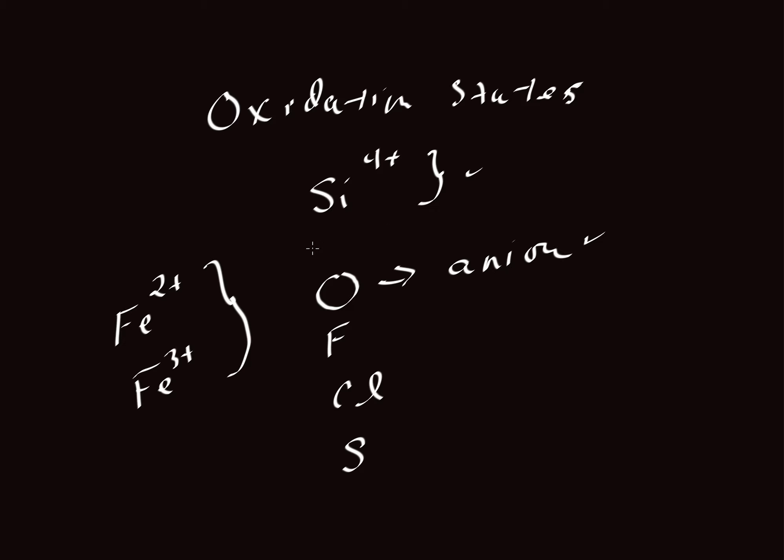There are some rare cases when you can find it a little bit more reduced. But with iron and earth's crust, we can find it in either one of these two states. Even in the same mineral, it can be in both of these states, both the two plus and three plus, occupying different sites in a crystal structure and satisfying different charge balance requirements in different parts of the crystalline structure.